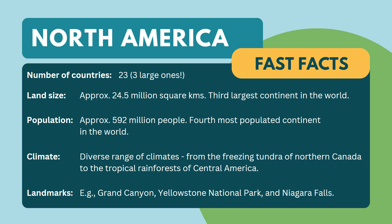Just a few facts about North America before we get started. There are 23 countries in North America, and I bet some of you are surprised by that because usually we think of the three large ones. As far as land size, it's about 24.5 million square kilometers. As far as climate, we're going to find a diverse range of climates in North America, all the way from the freezing tundra of northern Canada to the tropical rainforest found in Central America. And there are lots of famous landmarks in North America — I bet you can even name a few.